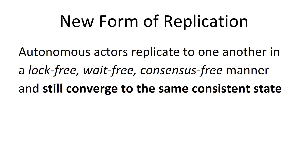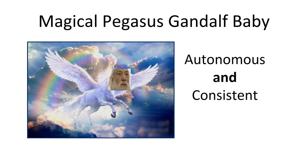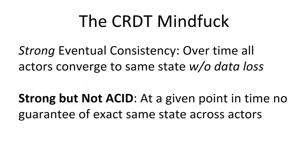CRDTs have a really magical quality in that the actors are autonomous, but they're still consistent — and this is as magical as if a Pegasus and Gandalf had a baby. It's a very large promise. And it delivers on this promise by bending the rules a little bit, so this isn't an ACID database. It's something called strong eventual consistency.